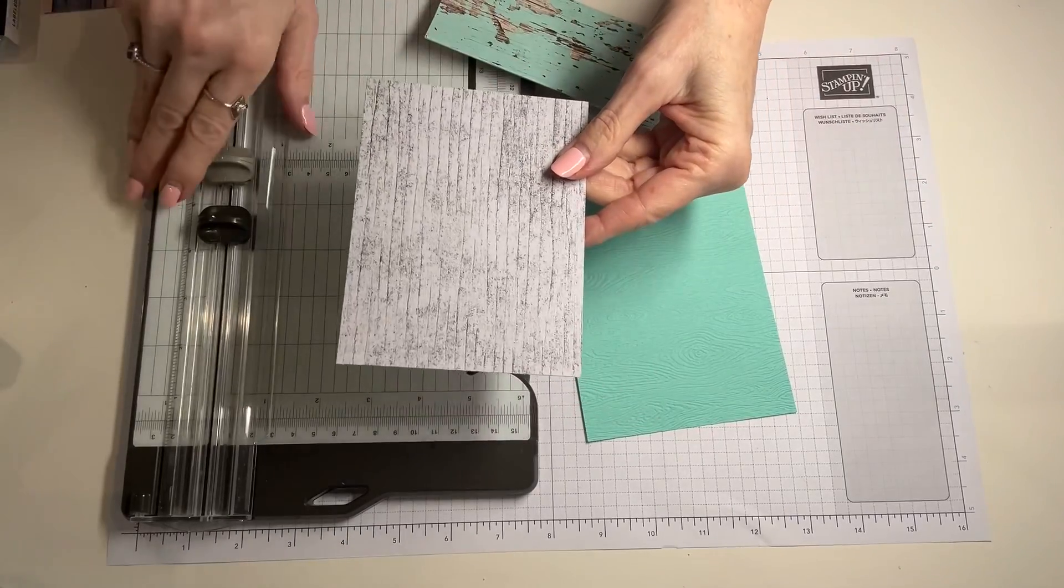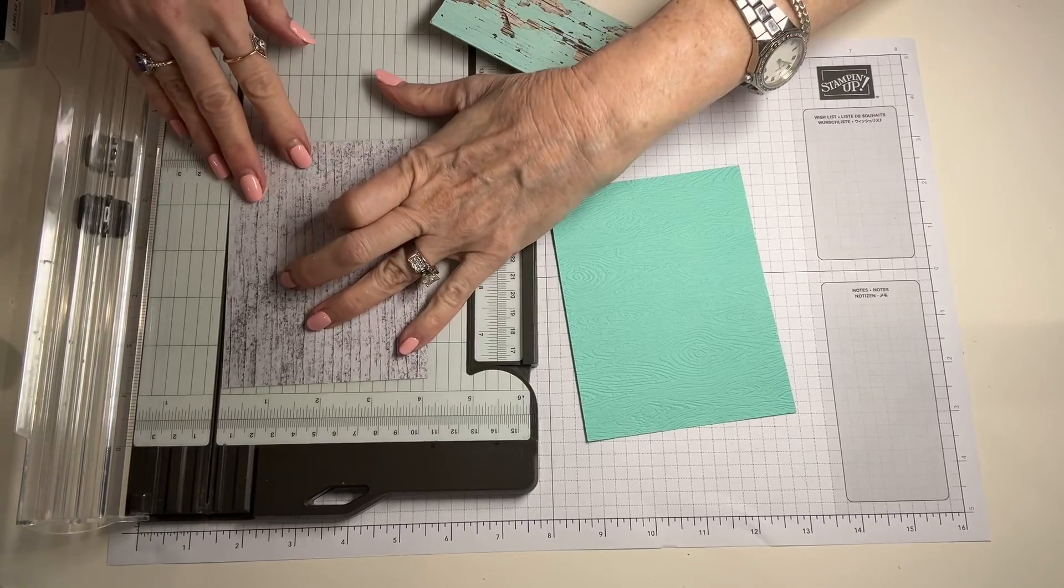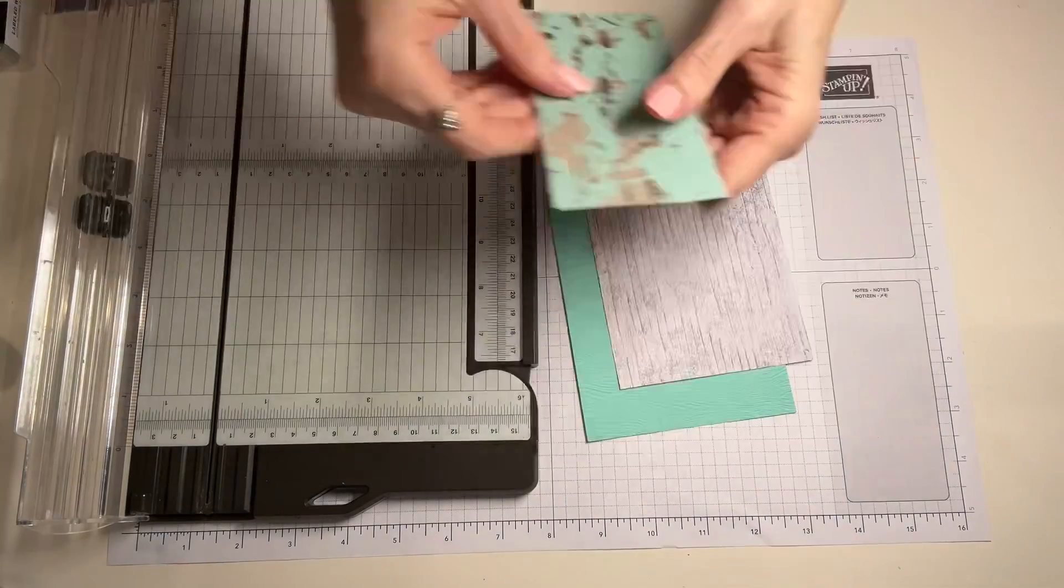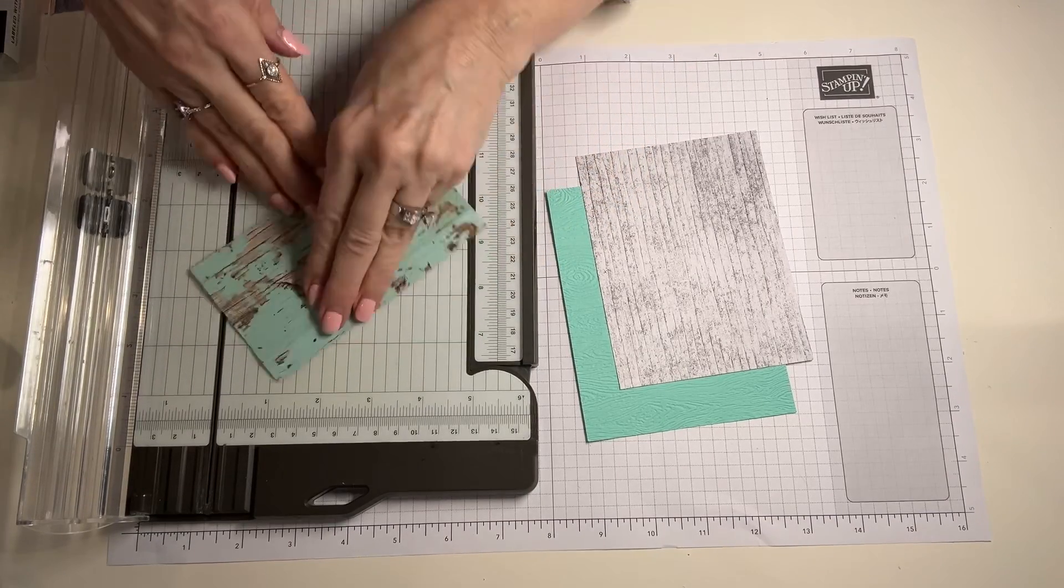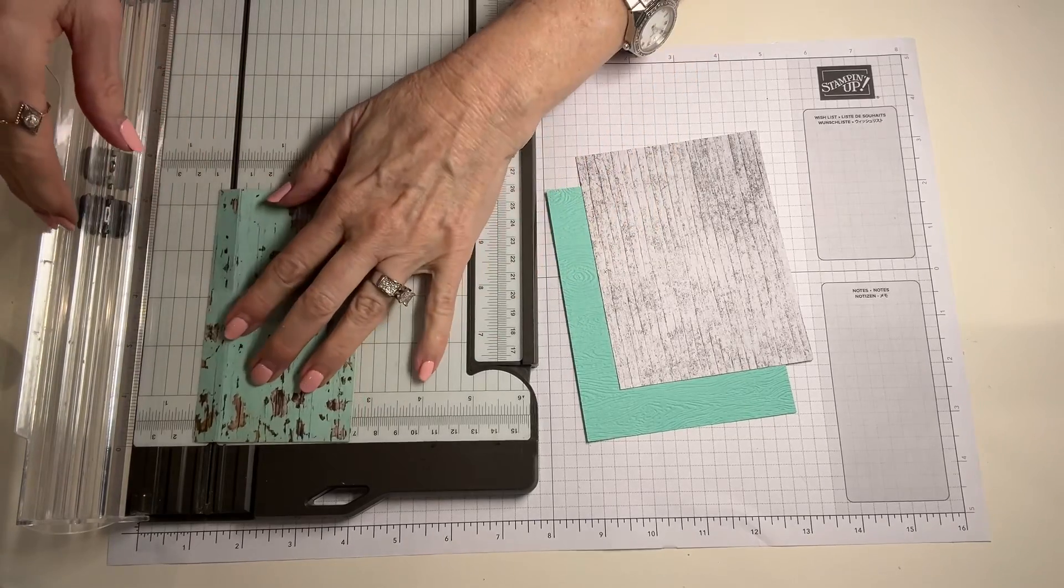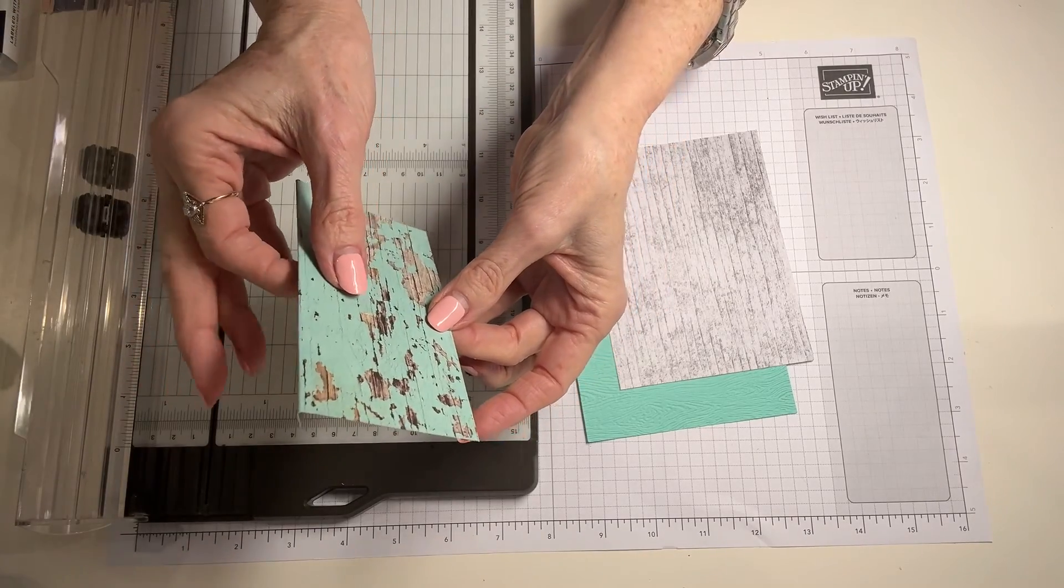Your second step is to cut a layer at five and a quarter by four. Five and a quarter by four and then you need a piece of designer series paper at five and a quarter by three. Now here's the trick with this layer. I'm going to have you score it at half an inch. So we're going to have a little score line right there.